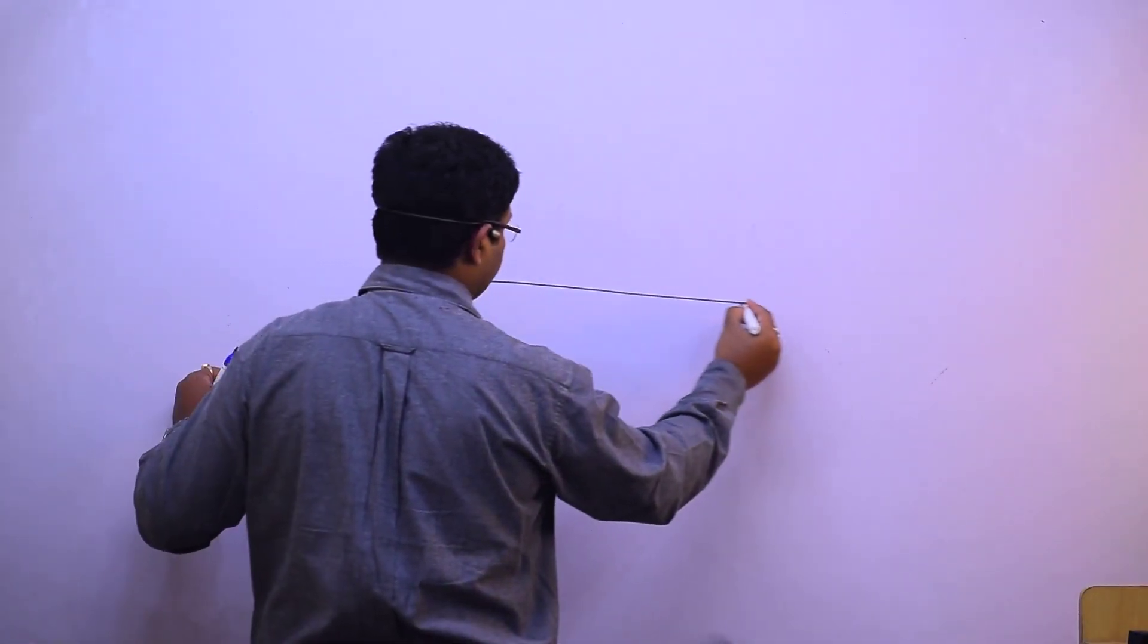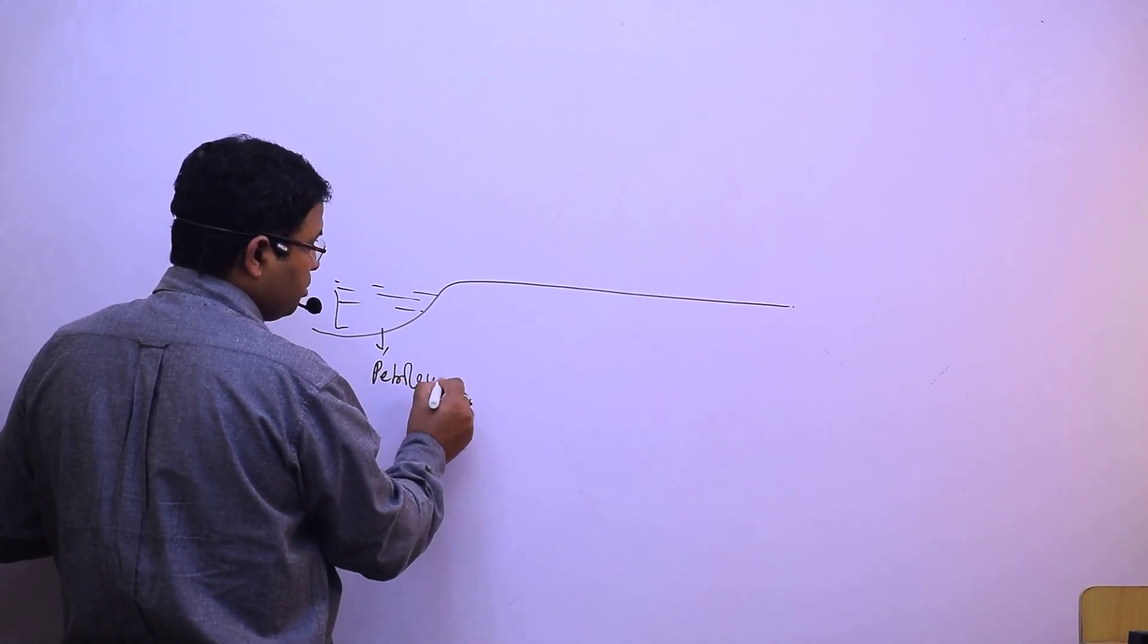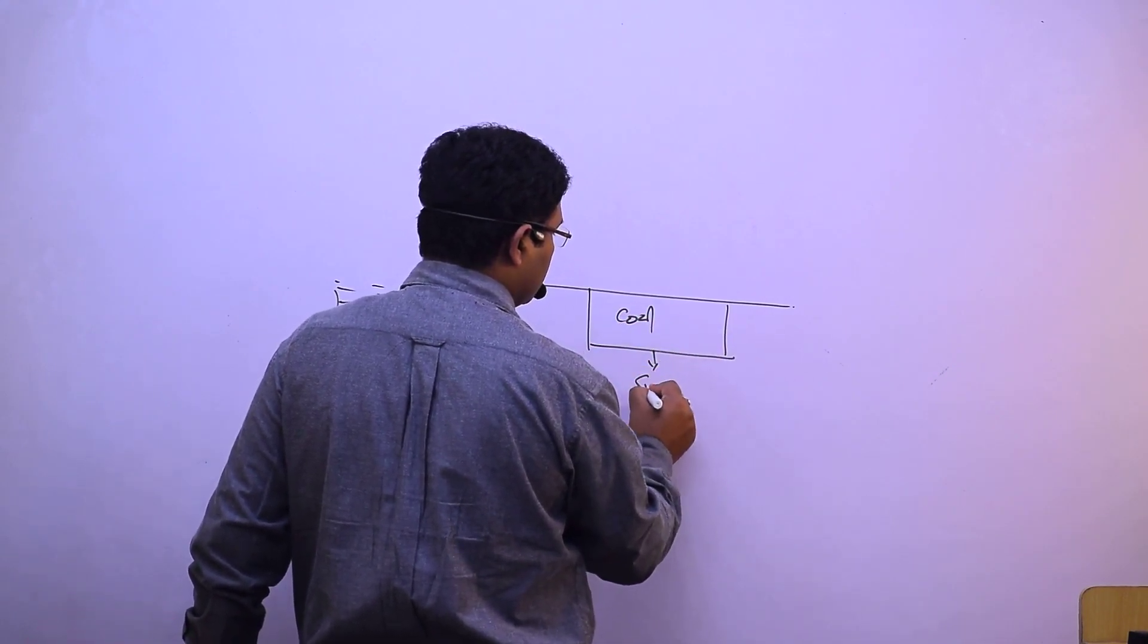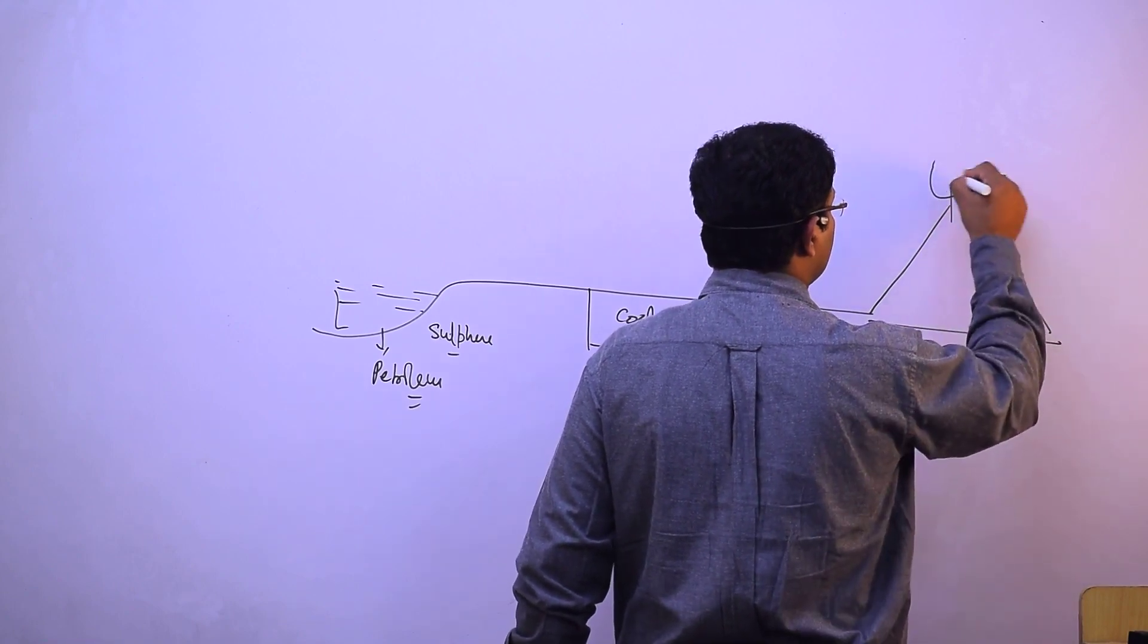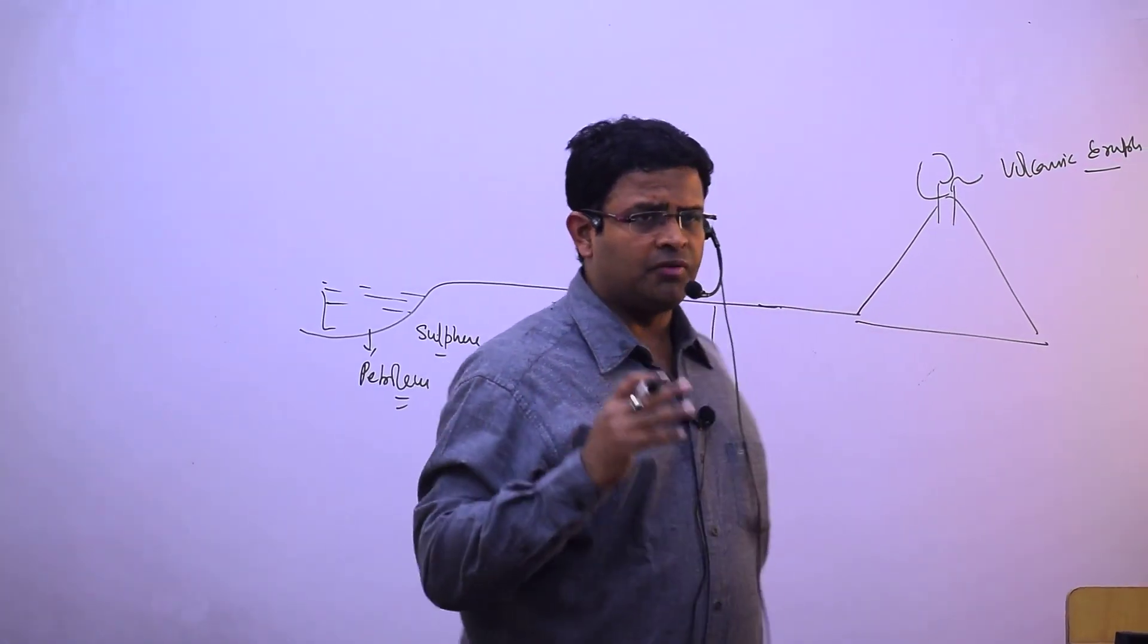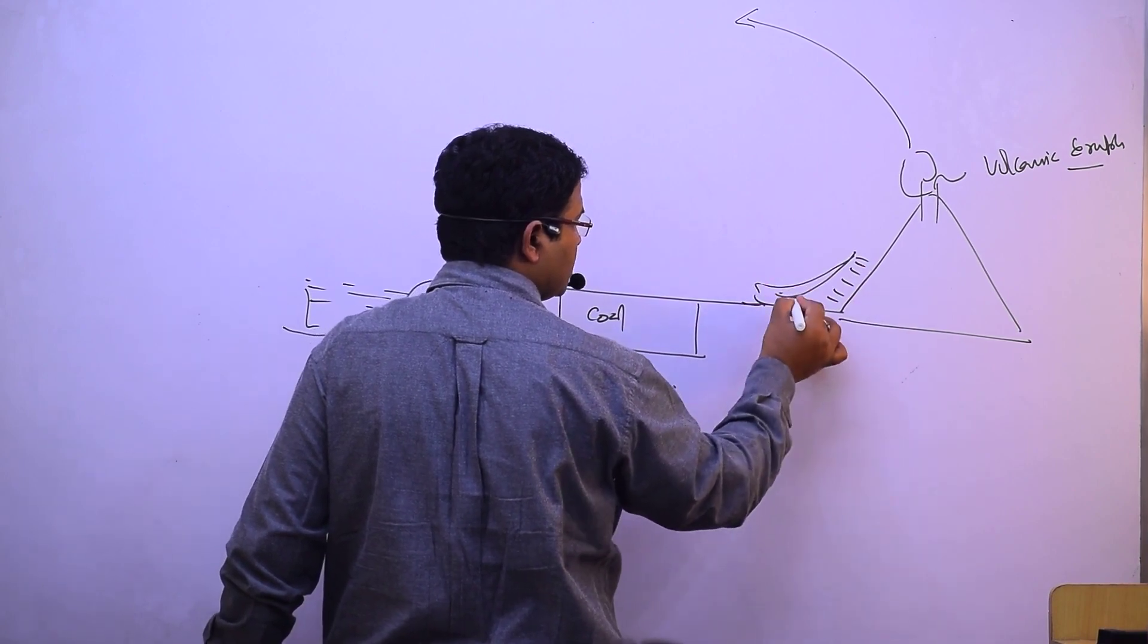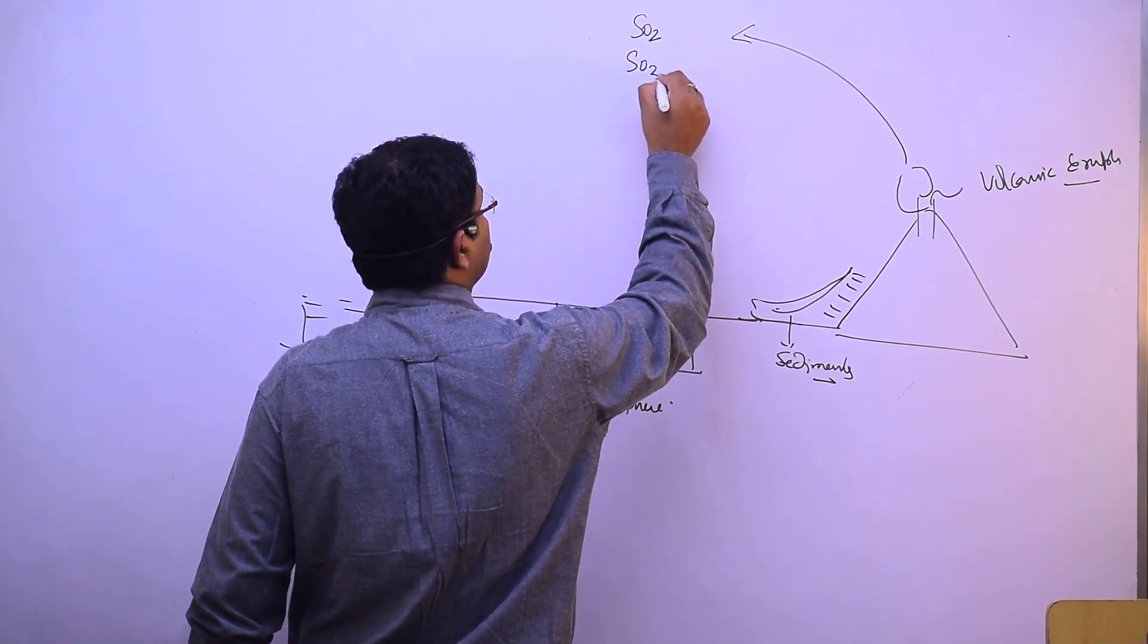In petroleum we have sulfur, and in coal we have sulfur. This sulfur is coming onto the earth's surface through volcanic eruption. In the natural cycle, through volcanic eruption, it goes into the earth's atmosphere or sediments in the form of sulfur dioxide SO2 and sulfur trioxide SO3.